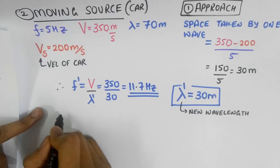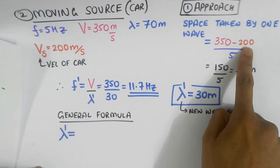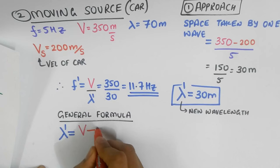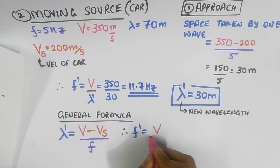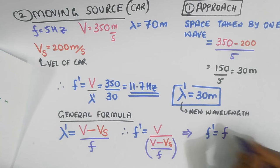Okay, let's quickly generalize this. Notice that Lambda Prime, which is 350 minus 200 by 5, is nothing but velocity of the sound V minus the velocity of the source Vs divided by the actual frequency. Hence, the registered frequency, F Prime, is V divided by Lambda Prime, which just gives us F times V divided by V minus Vs.